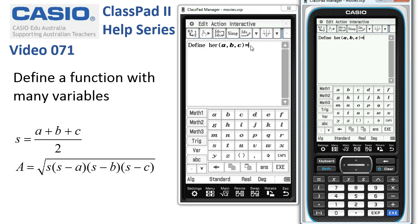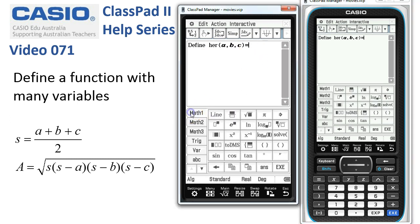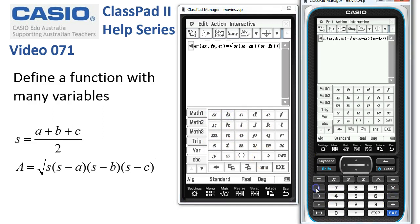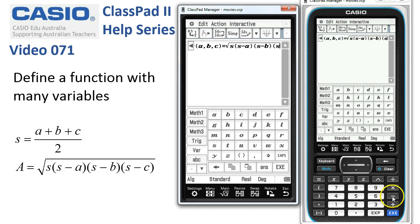Now for the rest of it we need Heron's formula. So that's from the Math1 menu and we get the square root template and it's going to be the variable s brackets s minus a, close the bracket, open the bracket, s minus b, close the bracket, open the bracket and s minus c and close the bracket.